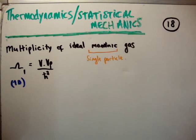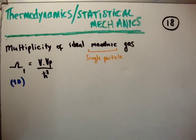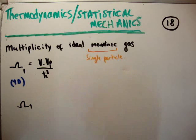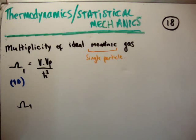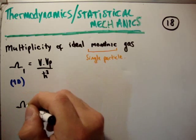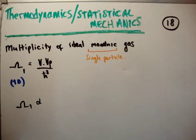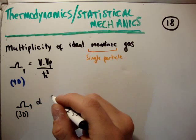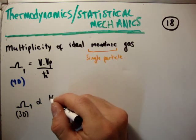So how do we find out the number of possible states? We need to talk about the number of possible positions it has, and the number of possible ways its momentum can be. Very generally, we can say that the multiplicity of an ideal gas with one molecule in three dimensions must be proportional to the volume in position space.